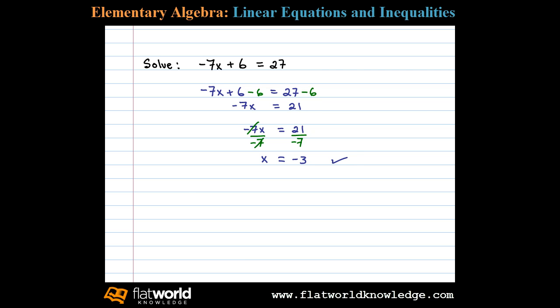We can check our answer by substituting that into the original equation to see if we get a true statement. So negative 7 times negative 3 plus 6, we're going to see if that equals 27. Negative 7 times negative 3 is positive 21 plus 6, and that does equal 27. So we get a true statement and our solution checks out.